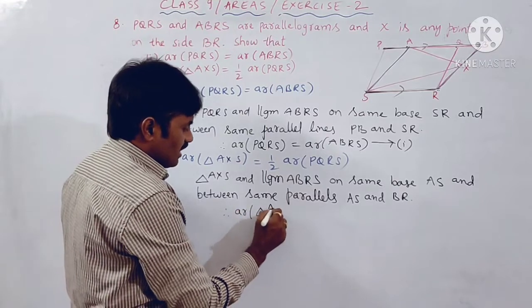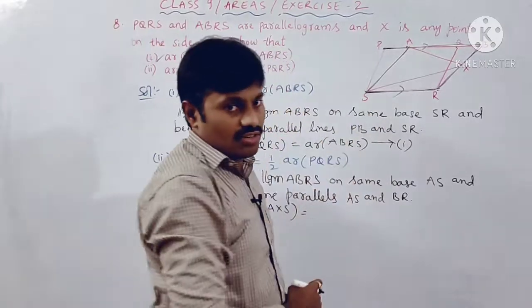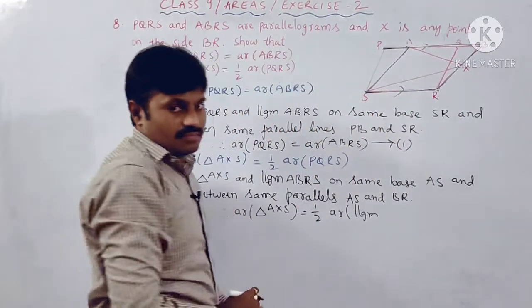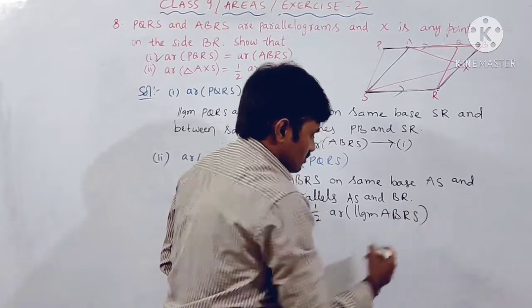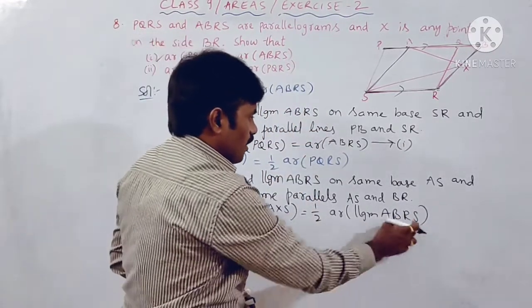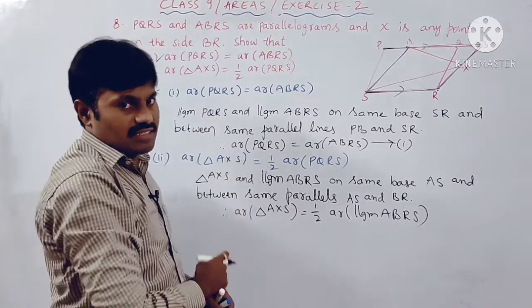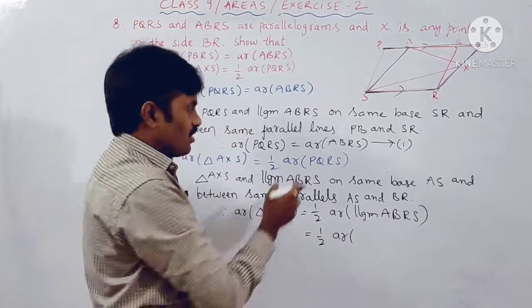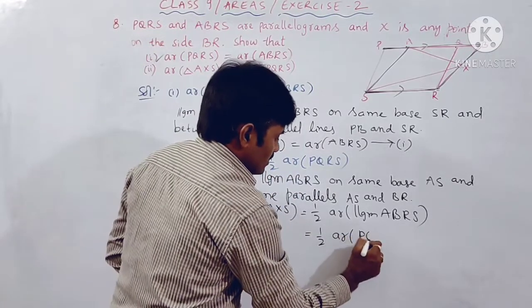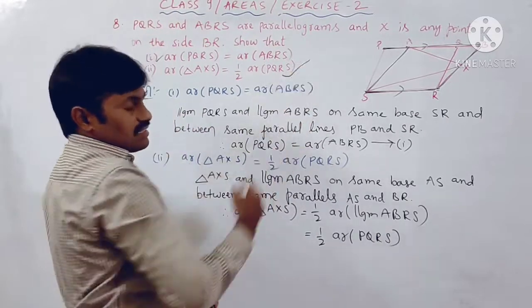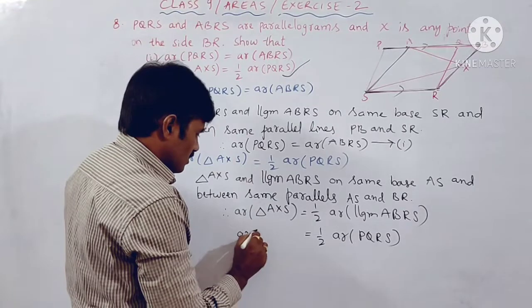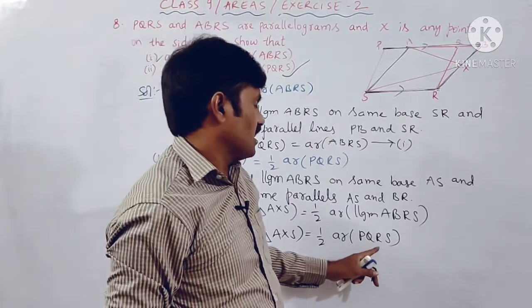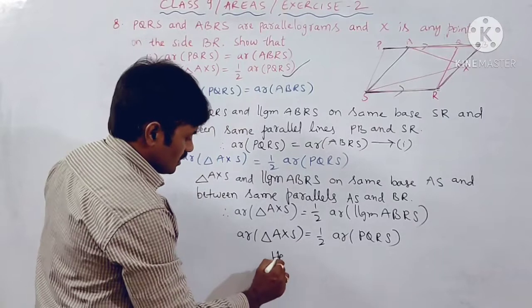So, area of triangle AXS equals half of area of parallelogram ABRS. But from part one, area of parallelogram ABRS equals area of PQRS. So substituting, area of triangle AXS equals half of area of parallelogram PQRS. Hence, second part is proved.